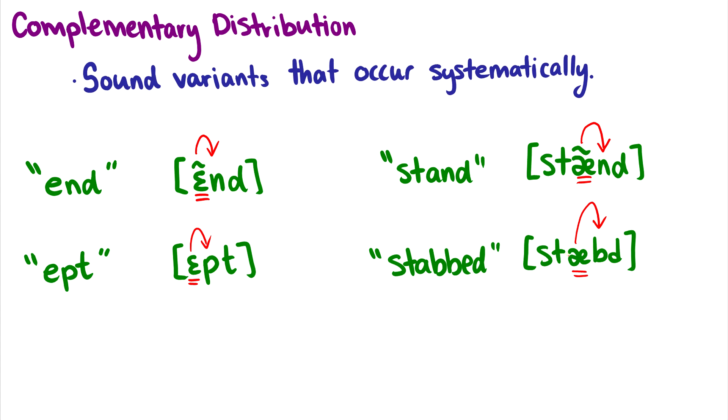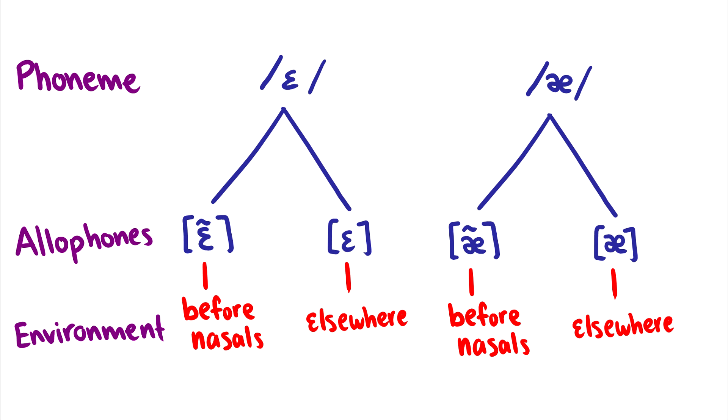If we replace the a in stabbed with the a in stand, we don't get a new word. If I say stabbed, you still know it's stabbed. So the sound isn't changing the meaning of the word. So the nasalized a and the oral a are not two separate phonemes in English. They actually belong to the same phoneme. And this is what is called allophones.